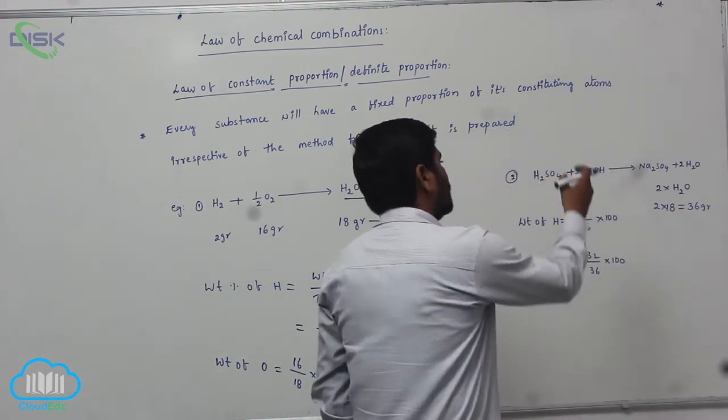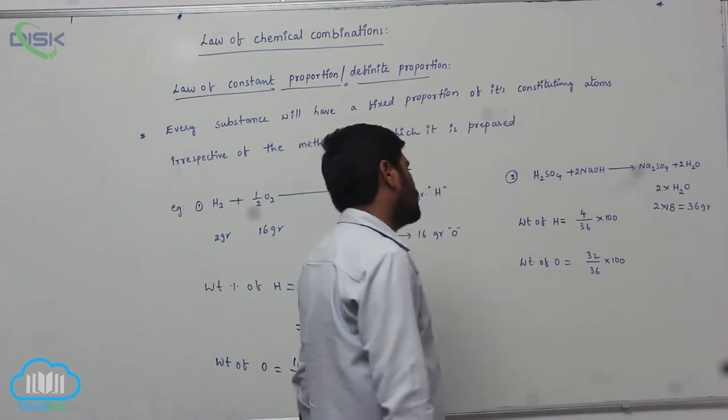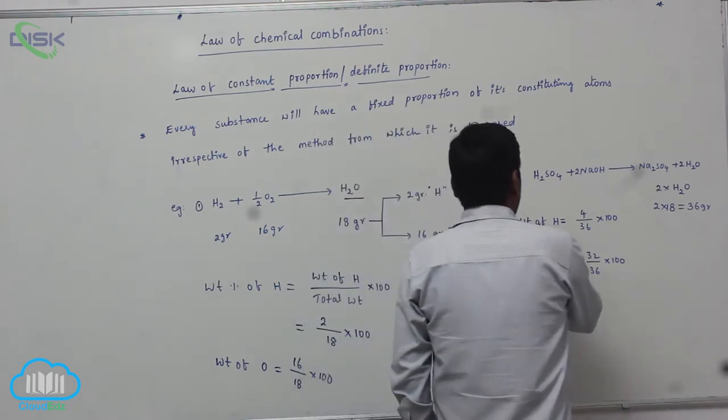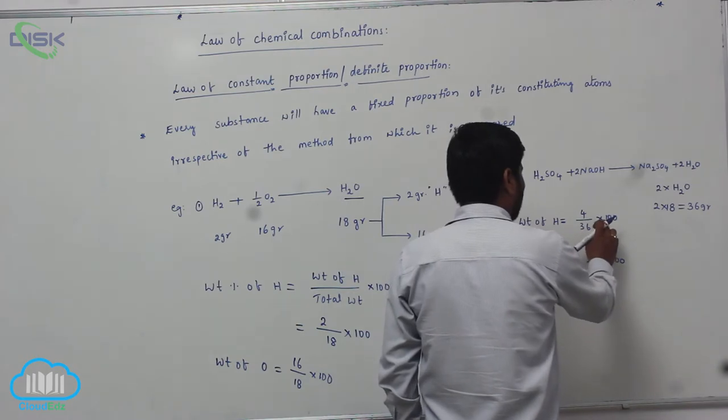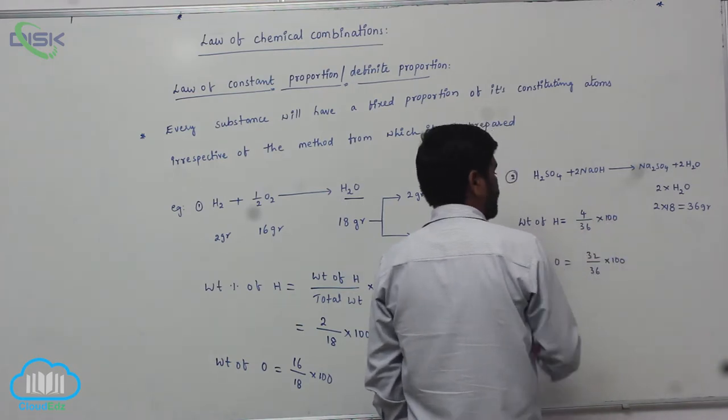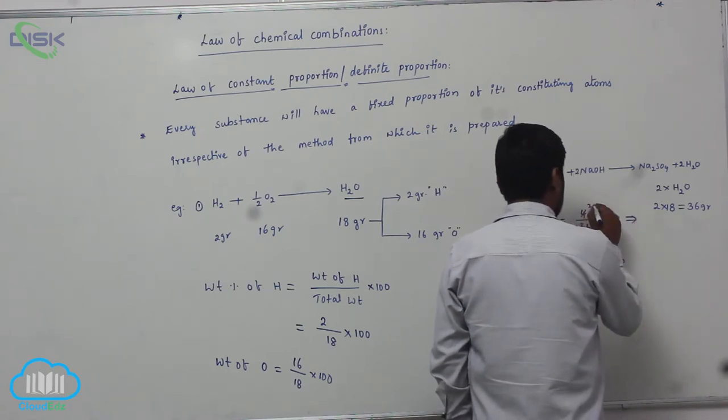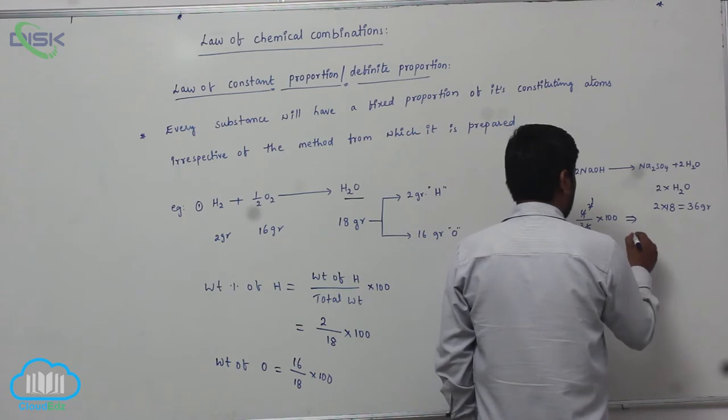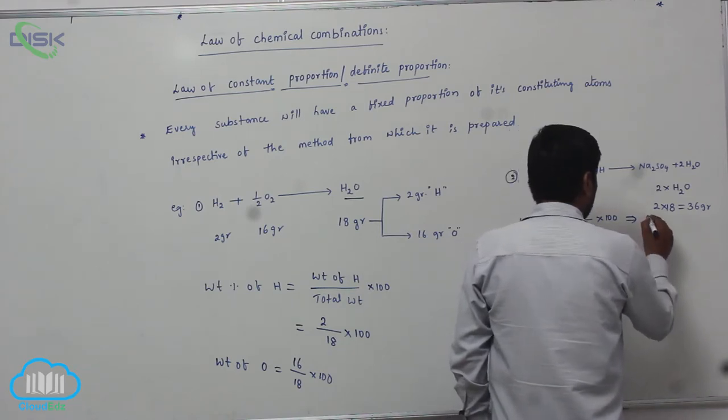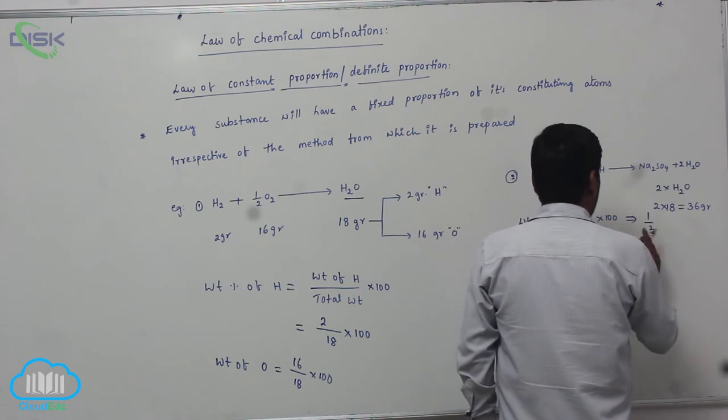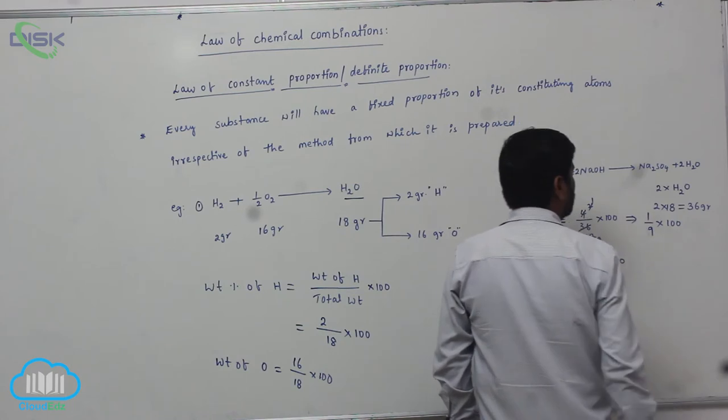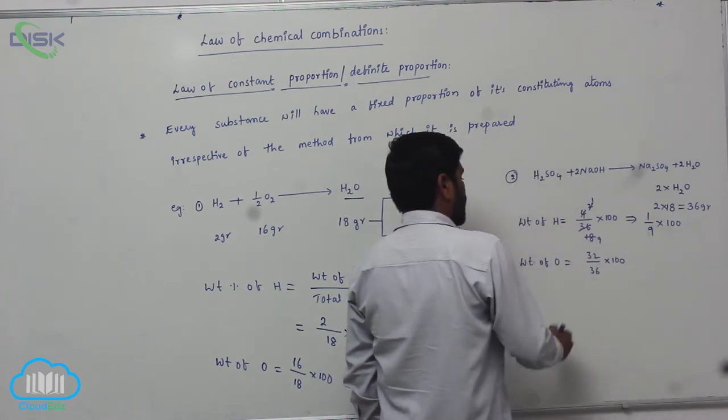But the ratio of hydrogen and oxygen is fixed. So therefore, weight of hydrogen equals to 4 by 36 into 100. So therefore, it becomes 2s, it is 18s, 18 to this is 1s, 9s. So this becomes 1 by 9, 1 by 9 into 100.